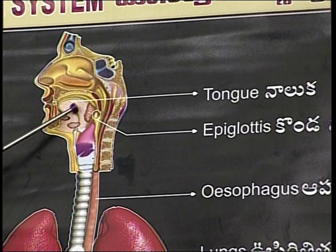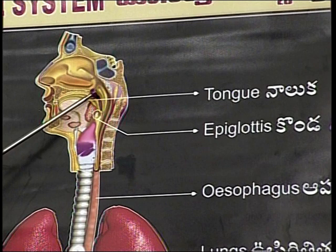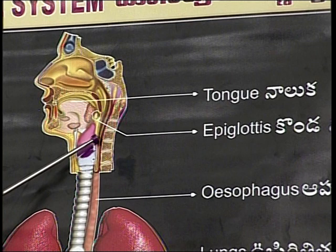The pharynx possesses some involuntary muscles to assist swallowing. There are lymphoid organs divided into three types: pharyngeal tonsils, a pair of lingual tonsils and a pair of palatine tonsils.